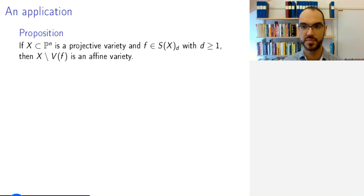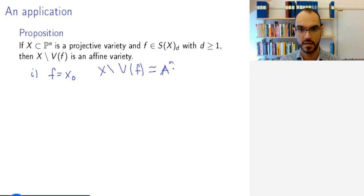Step one, if the polynomial is simply the polynomial x_0, then X minus V(f) is simply the affine slice in P^n. We have seen this many times. This is clearly affine.